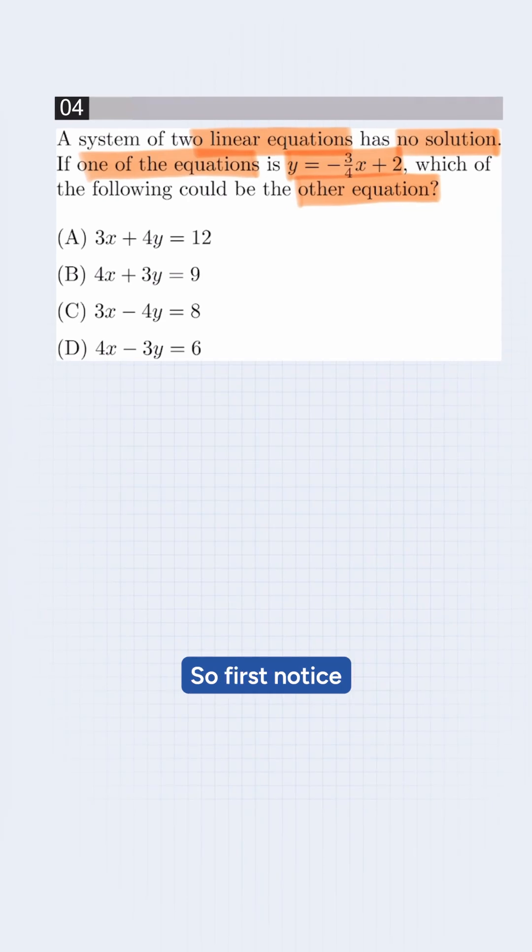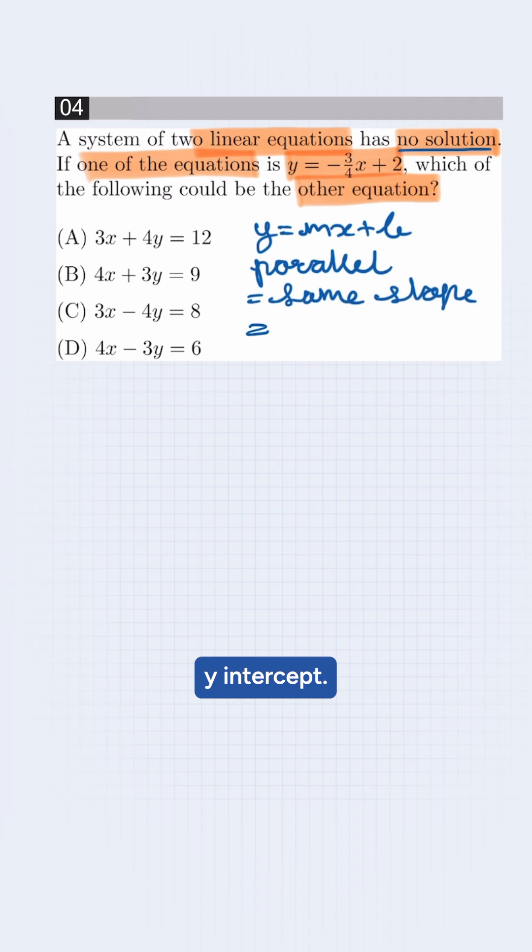So first, notice the first equation is in the form y = mx + b. Now the system has no solutions, so a line must be parallel which has the same slope but different y-intercept. So we compare each option and select the correct answer.